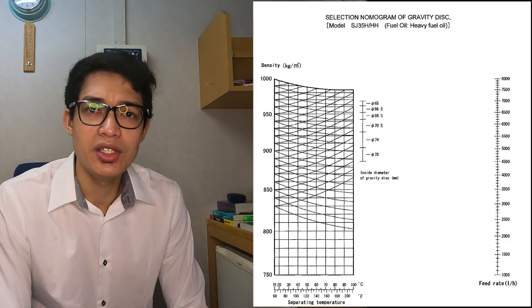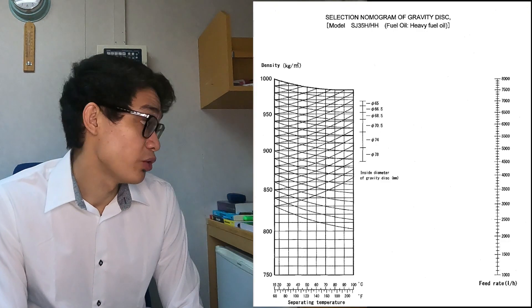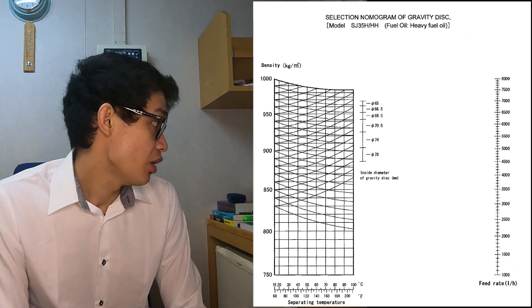For Example 2, we have an oil with an unknown specific gravity at 15 degrees Celsius. Instead, its specific gravity is given at 50 degrees Celsius. The given values are: density of 944 kilograms per cubic meter at 50 degrees Celsius, a treating temperature of 98 degrees Celsius, and a feed rate of 1,250 liters per hour. In this scenario we need to first convert the given density to a specific gravity at 15 degrees Celsius.